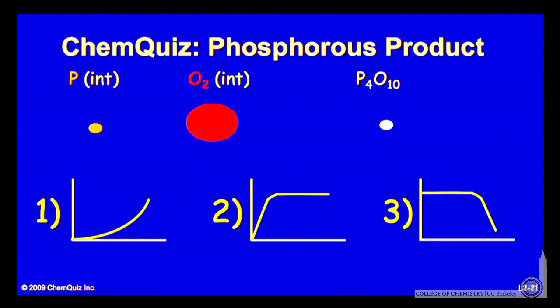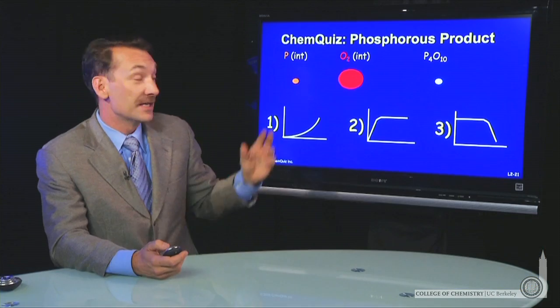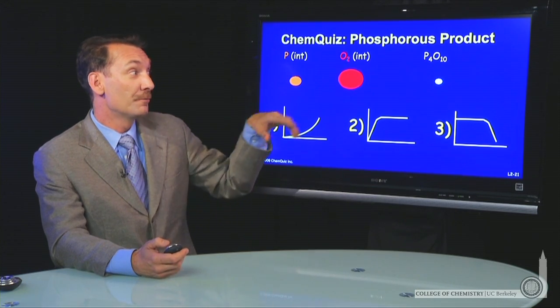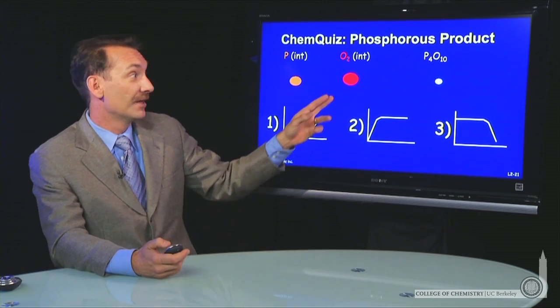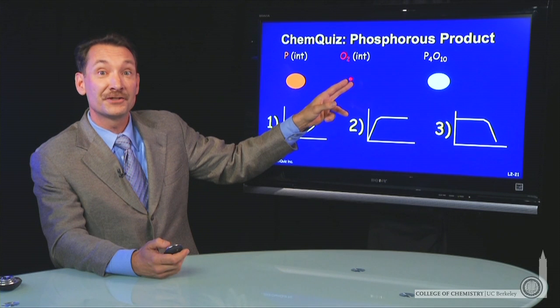If you add a little bit more phosphorus, you'll produce a little bit more phosphorus oxide. You'll use a little bit more of your oxygen.